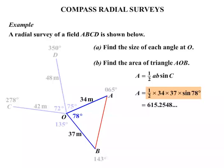When we calculate that, we get 615.2548. And often we'll round these off to the nearest whole number. So that rounds off to 615 square metres. We round it off to the nearest square metre.